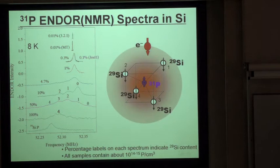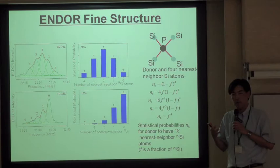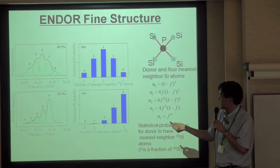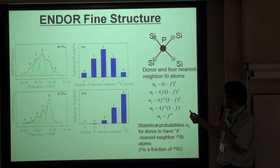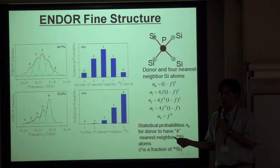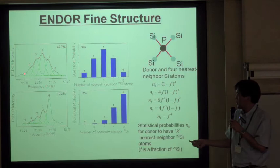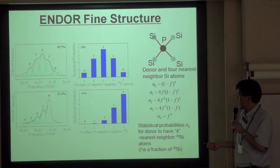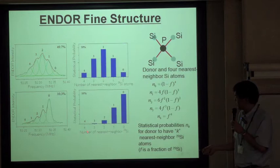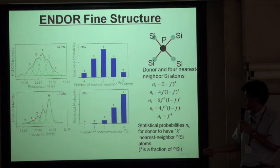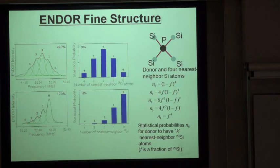We can confirm this interpretation by estimating the probability of having a given number of 29Si nearest neighbors. For example, for 50% background 29Si, the probability of having two 29Si close to phosphorus is largest. Using these calculated probabilities as amplitudes, we can reproduce the ENDOR intensities of peaks 0, 1, 2, 3, and 4 very well for both 50% and 10% background concentrations.